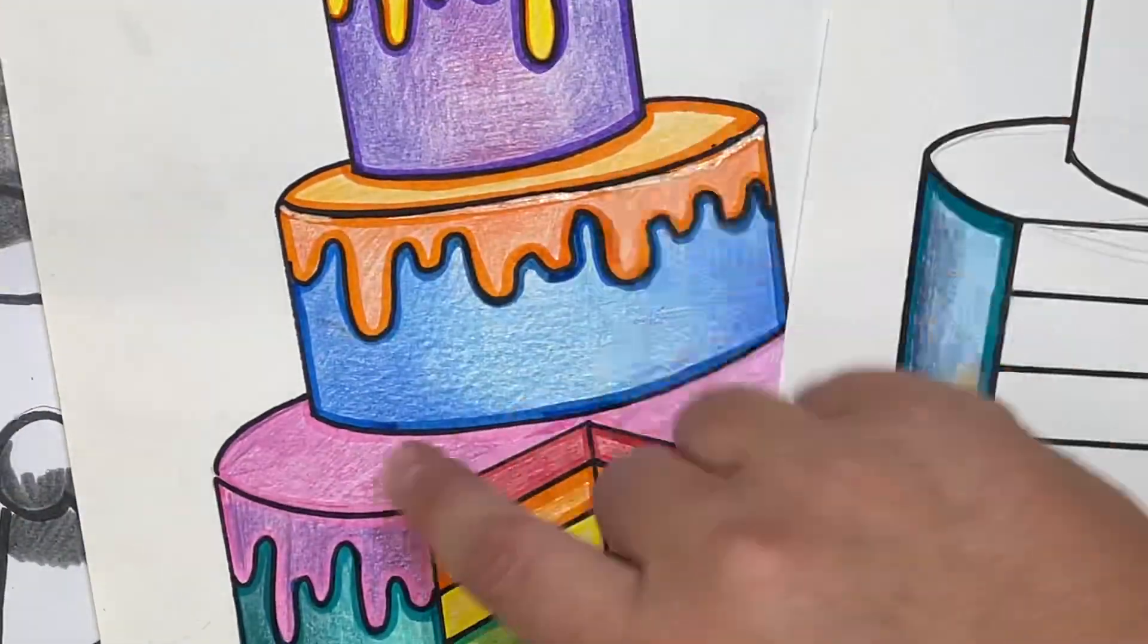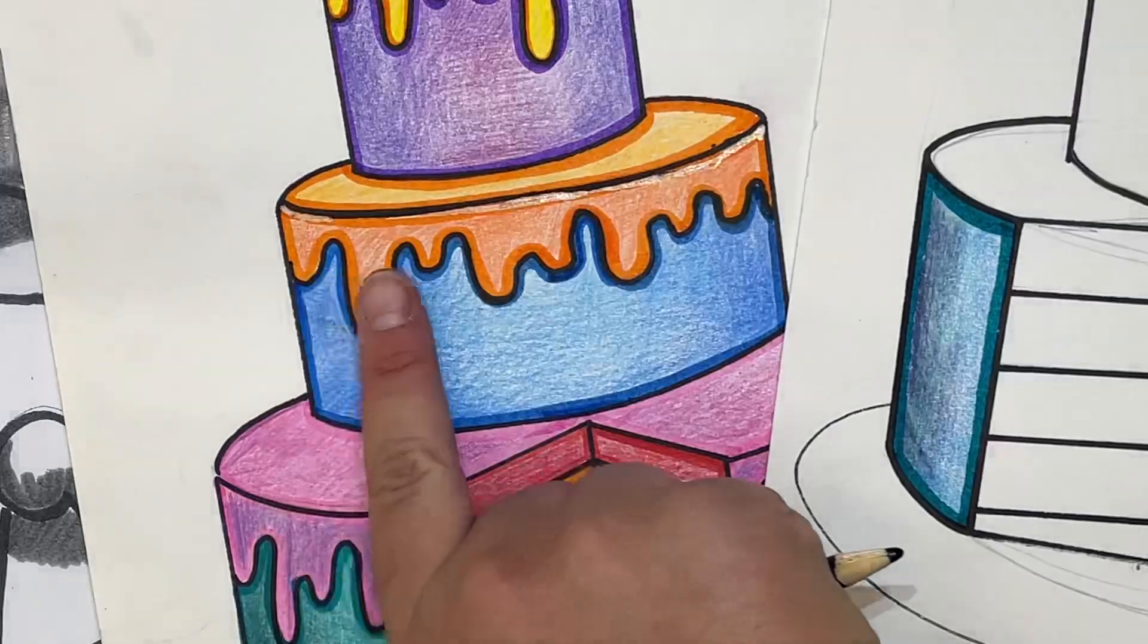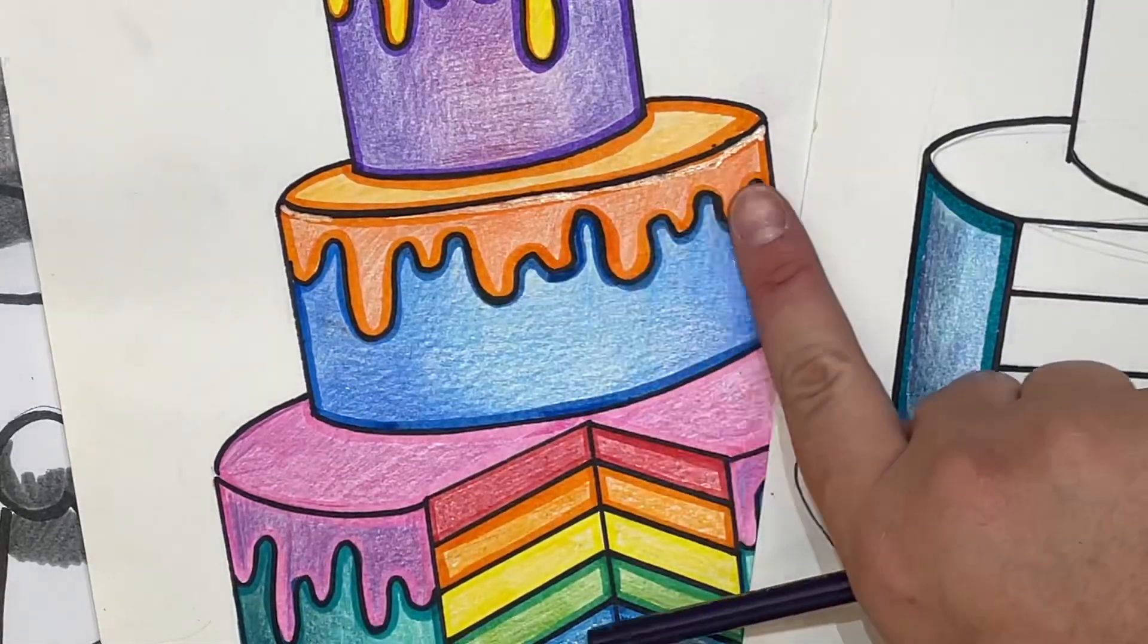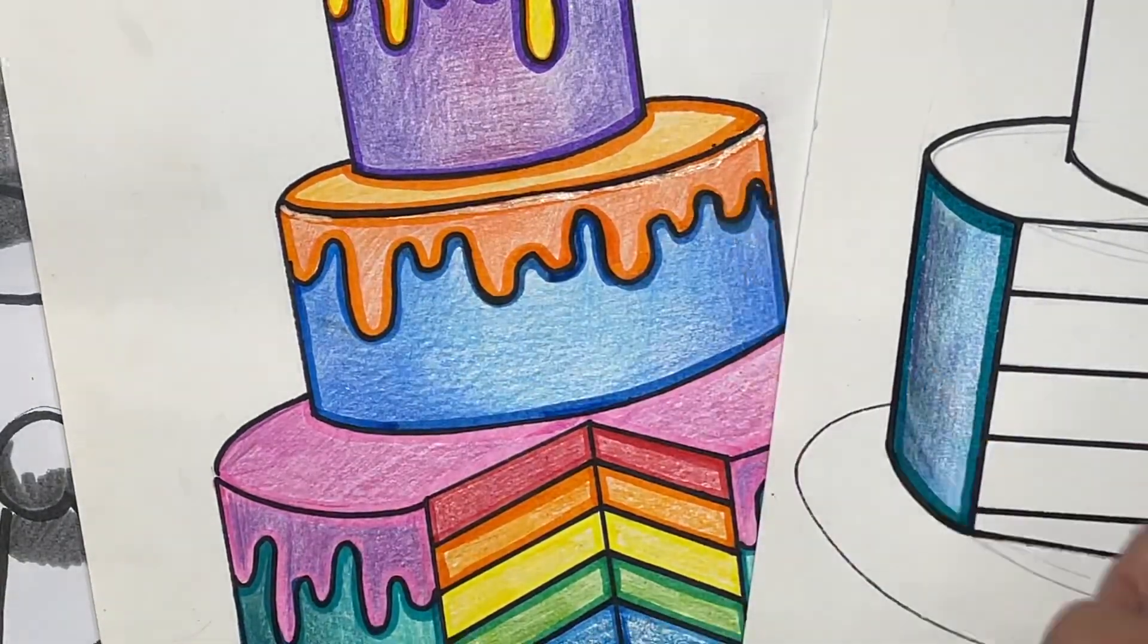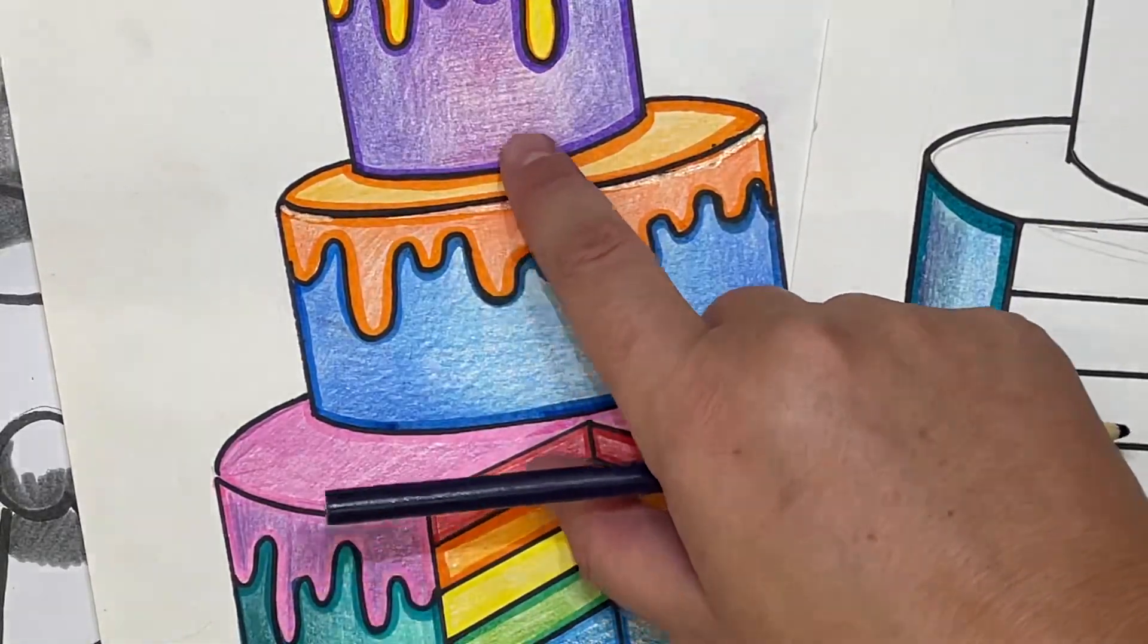We can see this happening here along the whole cylinder. It goes from dark to light back to dark again. Notice how the frosting on this side is darker than the frosting on the top.